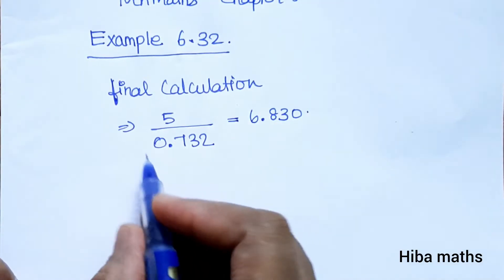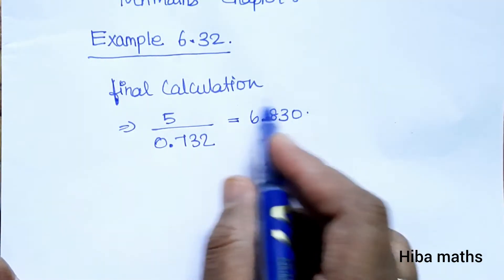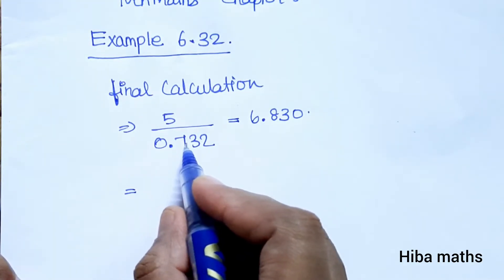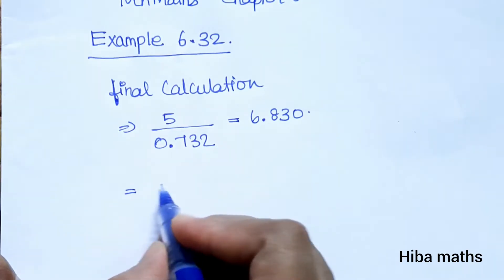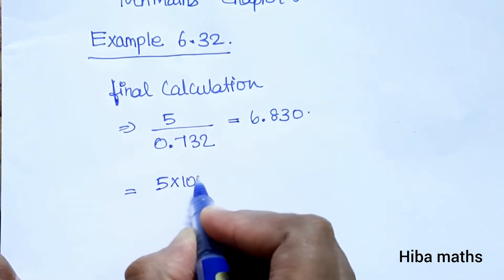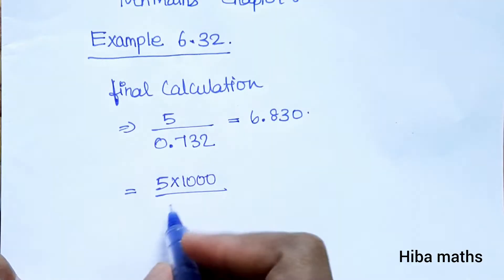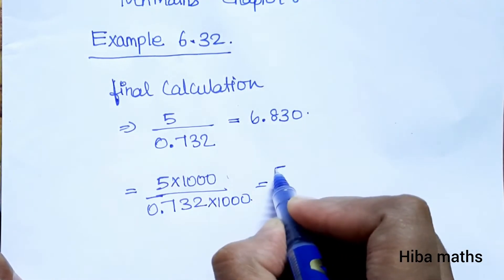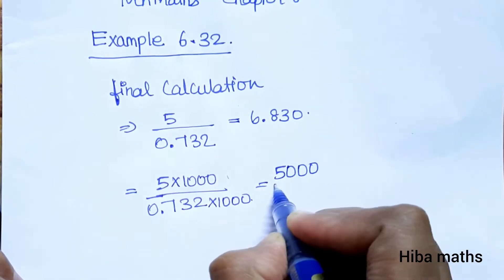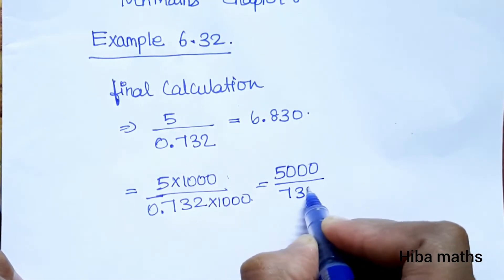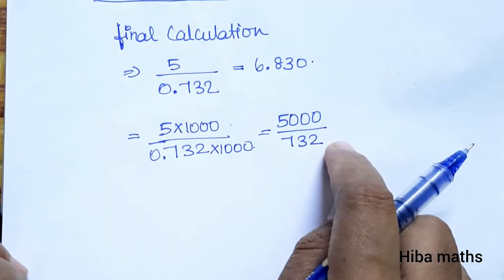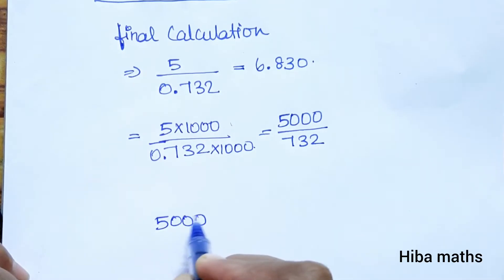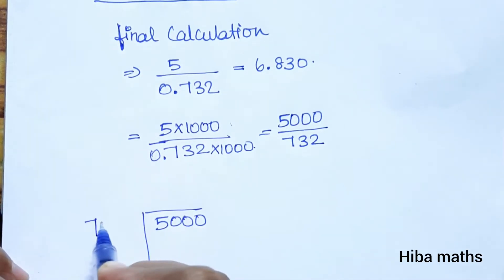The next step is the final answer. 5 is 0.732 — 3 decimal points. So we have to remove the decimal point. The number becomes 732. We have 5,000 divided by 732.